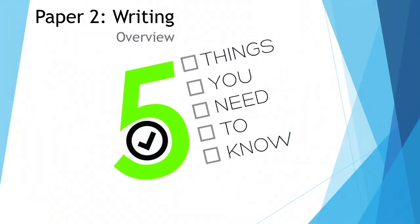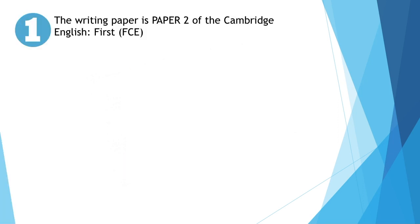Here are five things you need to know about paper 2. Number 1: The writing paper is paper 2 of the Cambridge English First FCE exam.